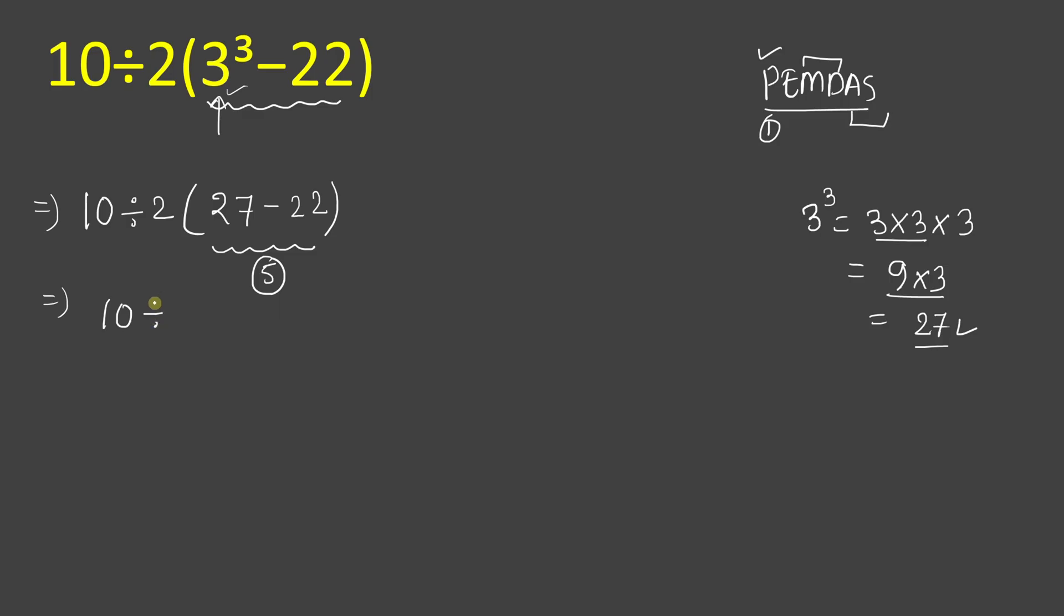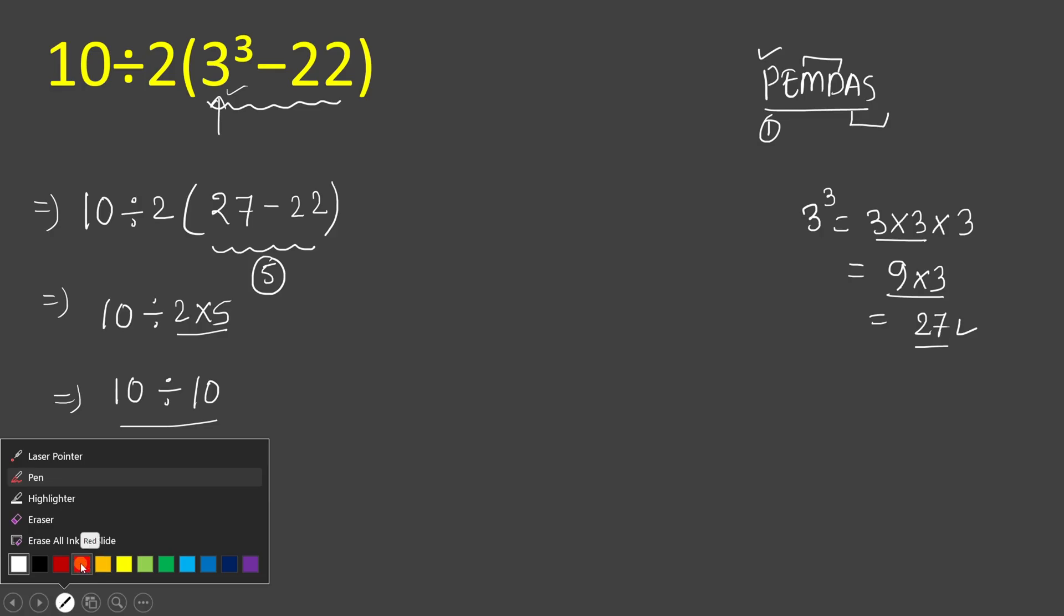Now 10 divided by 5, 10 divided by 10 this will be 1. So 1 is the right answer here. Many are solving in this way, but this is not the right way. I will show you how you can solve.